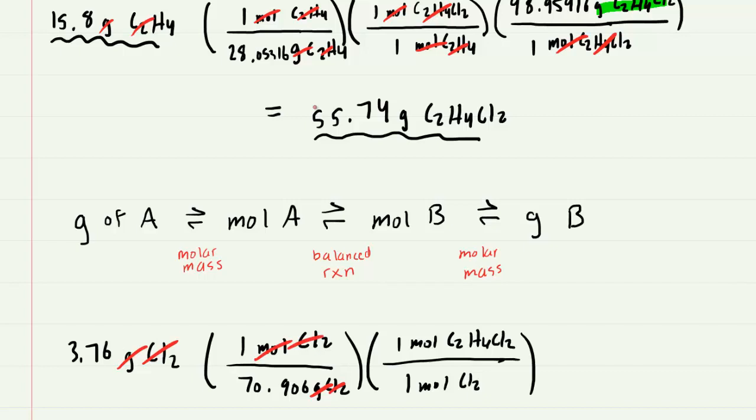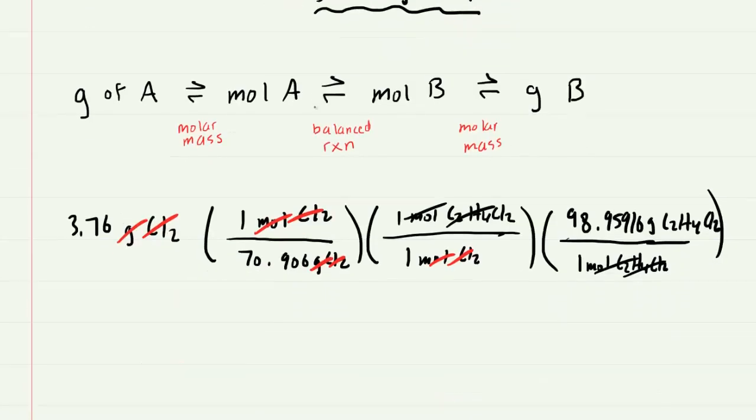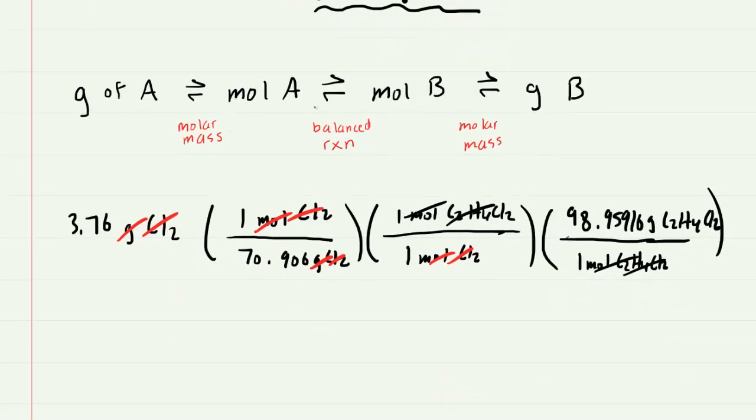We'll cancel out the moles of Cl2 and then finally we'll convert moles of our product to grams of our product using the molar mass of the product. And we recall that one mole of the product was equal to the 98.95916 grams of the product. Pick up your calculator after canceling these moles and let's see how many grams of product we would get. When we do this, we get about 5.25 grams of the product.